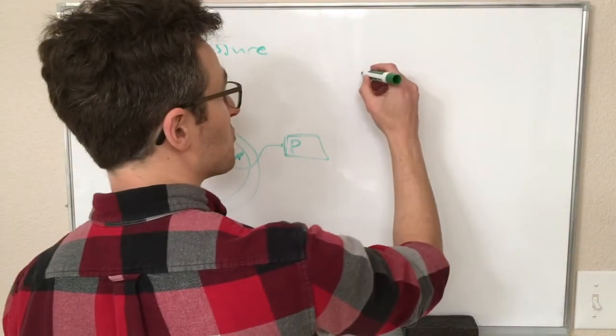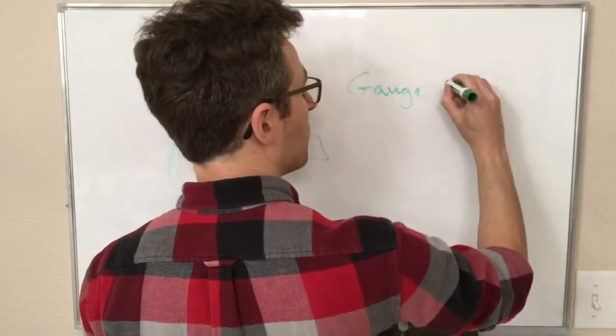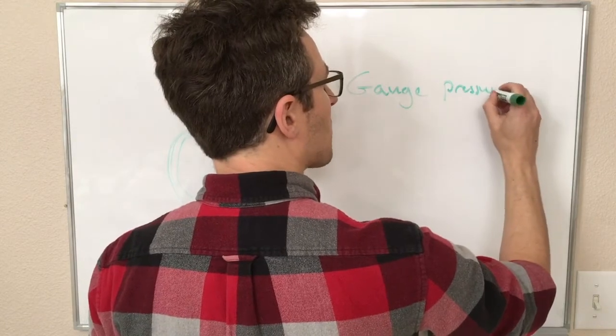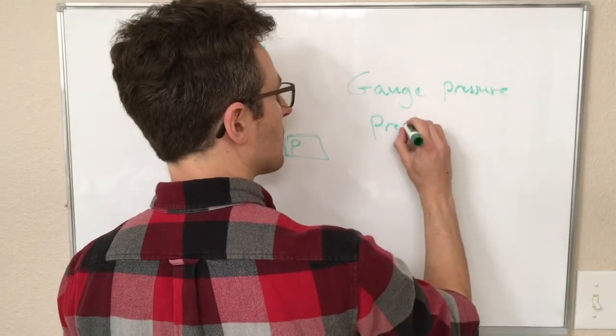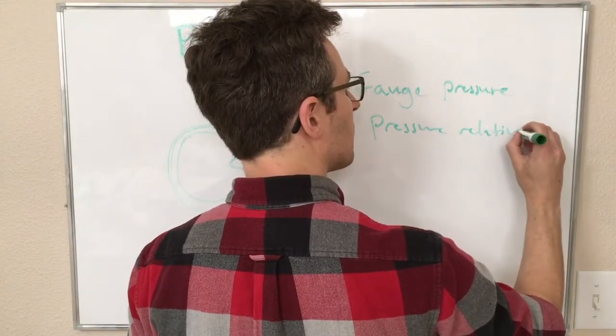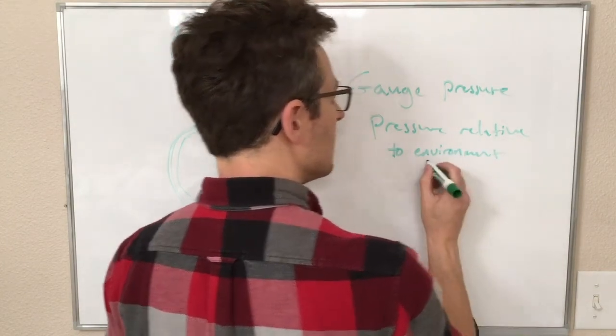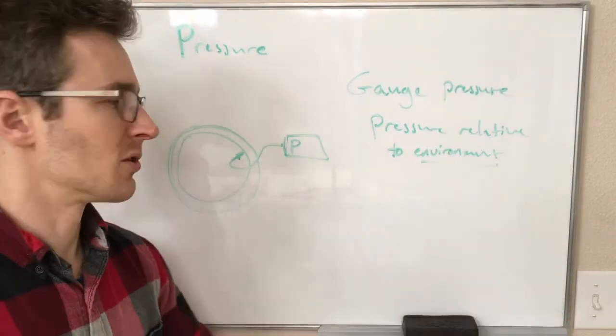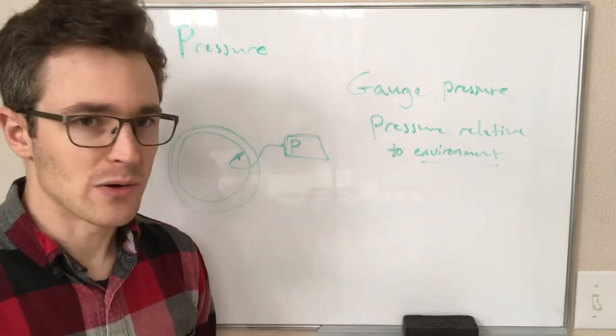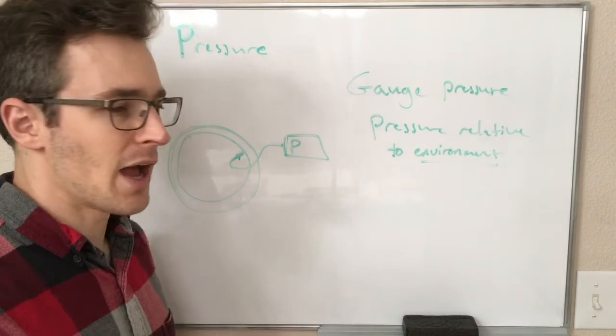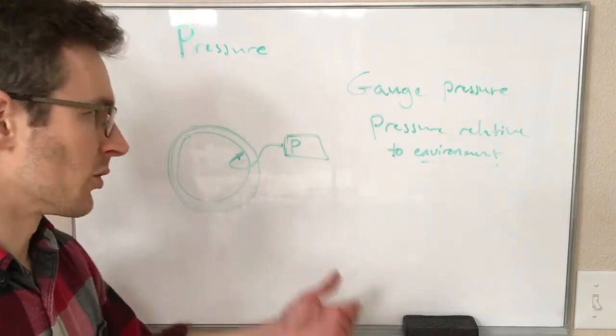This is the idea of gauge pressure. A gauge is a device that we use to measure pressure. So the gauge pressure is the pressure of a system measured relative to the environment. And the environment here is most often the air pressure in the room, but you could also make a gauge pressure where your environment was in outer space or at some different altitude on Earth where the pressure is different or even underwater or something where the pressure is higher.